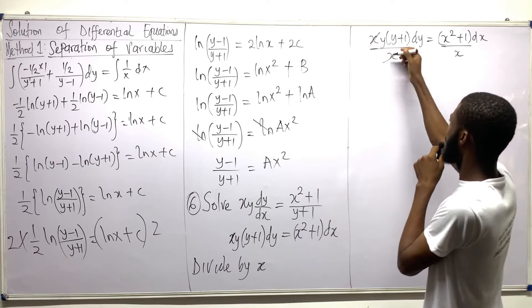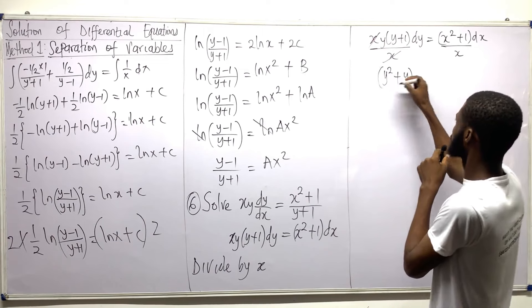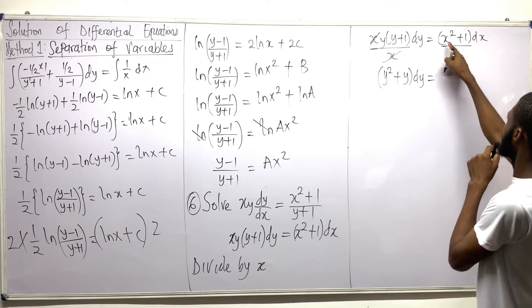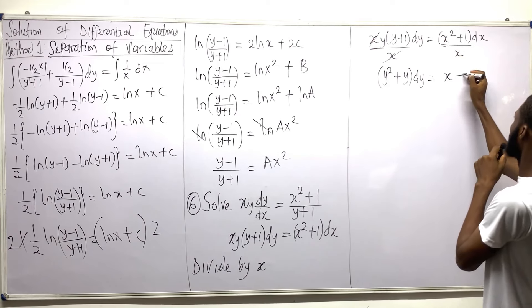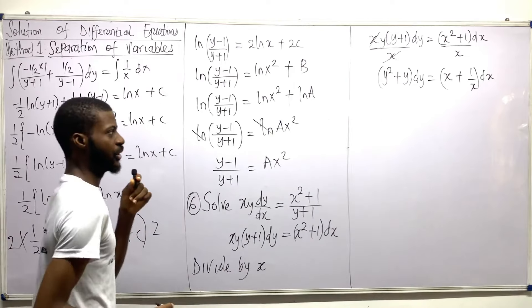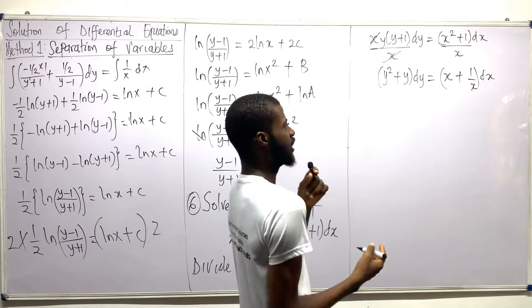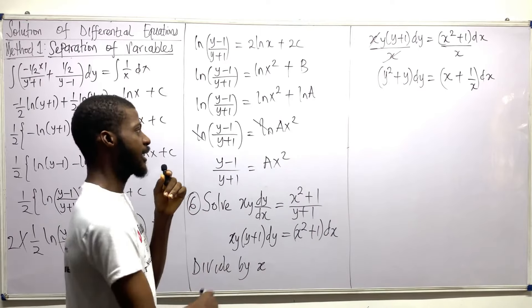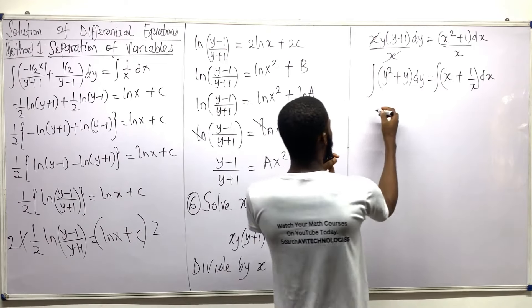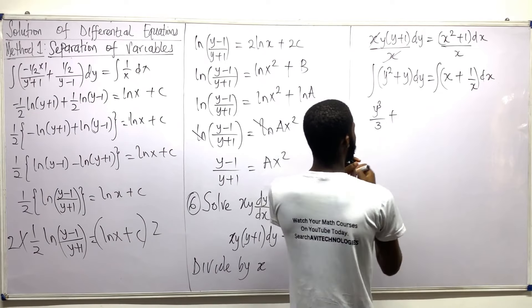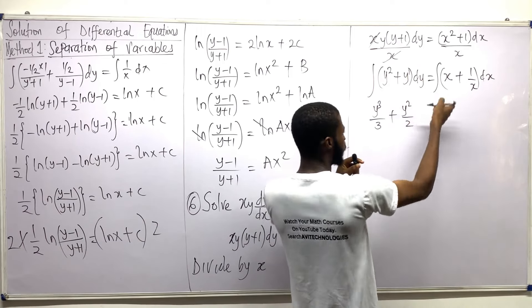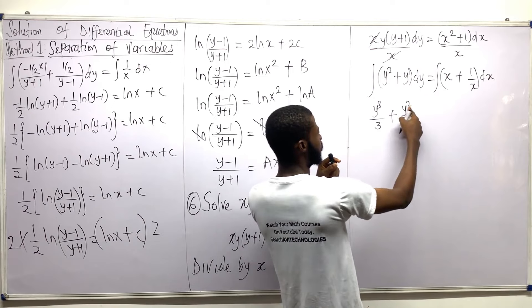What is left here will become y into y. So I will say that this is just y squared plus y dy equals. Now how about this? I have to divide this — so this is x squared divided by x is x, plus 1 divided by x, dx. Now what's the next thing I have to do? I need to integrate both sides. So let's integrate both sides. Now what is the integral of y squared? That will become y cubed divided by 3, plus y squared divided by 2.